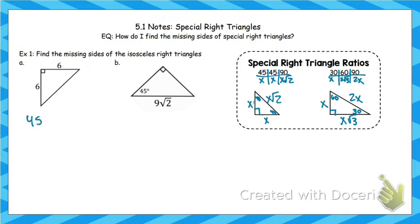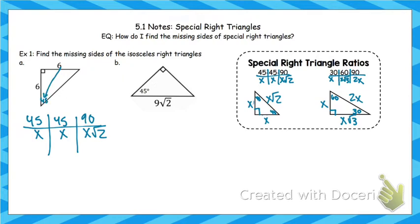I'm going to make my little chart — this is how I do most of these. So x, x, x√2. Across from 45 is 6, so 6 goes in the 45 column. That means x is 6. Replacing x with 6, across from 90 is 6√2.